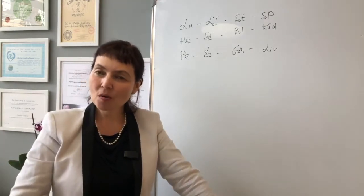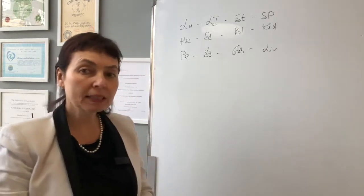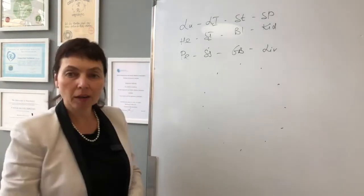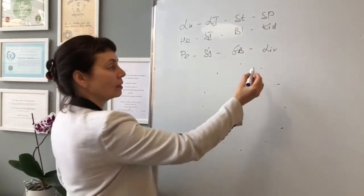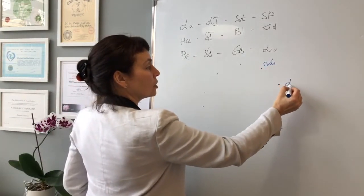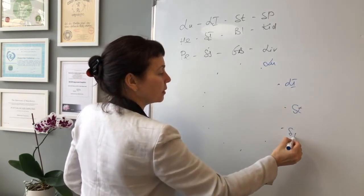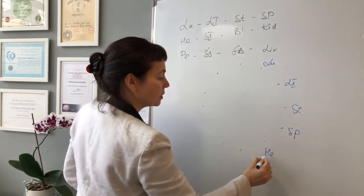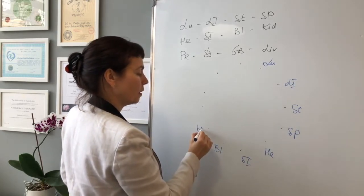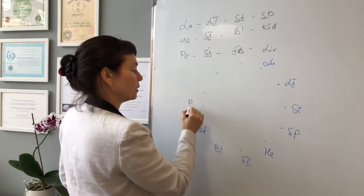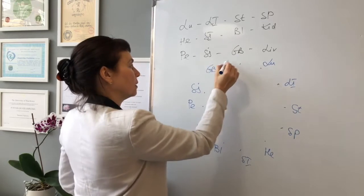And now coming to System 4, we will sing the same song. Please start with me: lung, large intestine, stomach, spleen, heart, small intestine, bladder, kidney, pericardium, triple heater, gallbladder, liver.